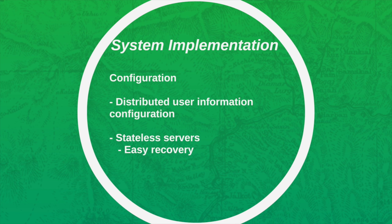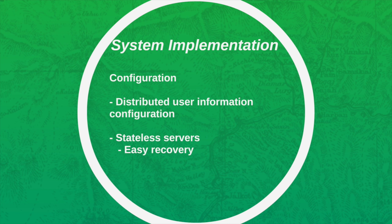Now I will talk about our system implementation. Basically it covers the three C's and fault tolerance. For configuration, when the player inputs his user information to start the game, his information including user ID, IP address, and port number will be sent to the master server and stored in the database. Then the master server will distribute the user information to a group of slave servers according to the group access code.